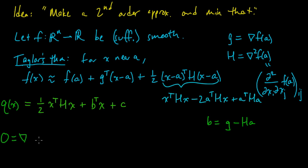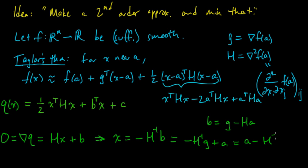So to minimize this, we just do the usual thing. Take the gradient. We get H x plus b. And now we set that equal to zero. So now we should solve for x to find the point which is the minimum. And that's going to be minus H inverse b. And let's plug in b here to figure out what this is in terms of the original stuff, g and a. So we're going to get minus H inverse g plus a. So that's a minus H inverse g.